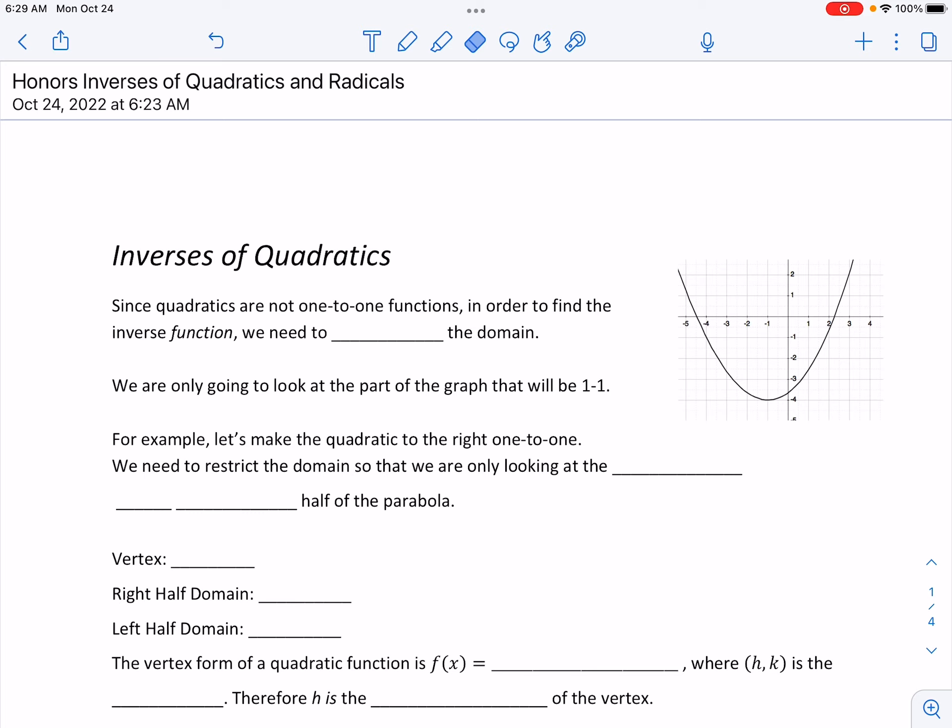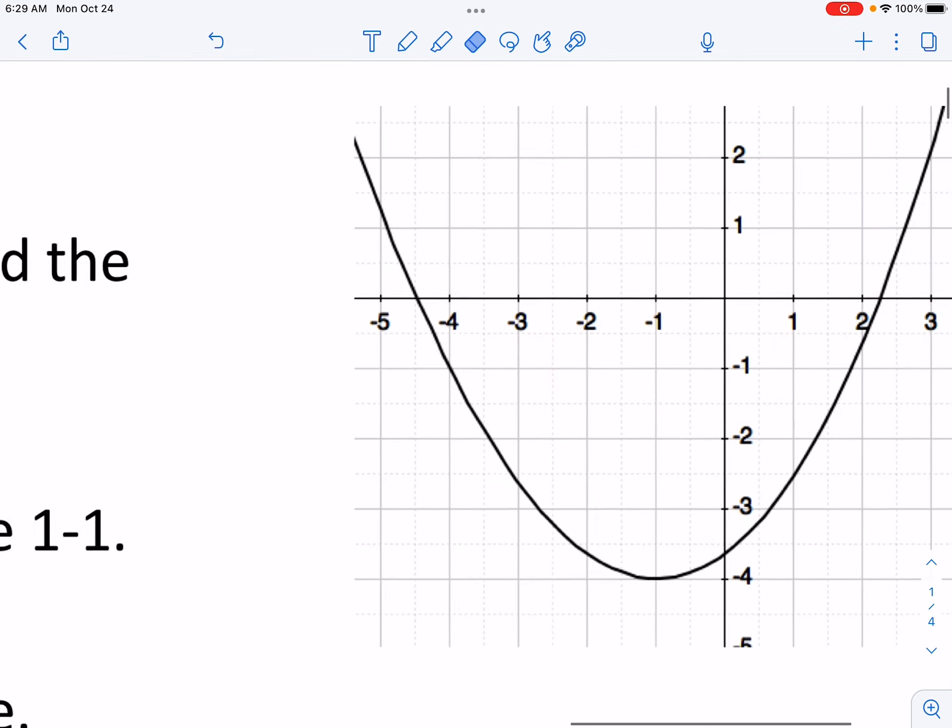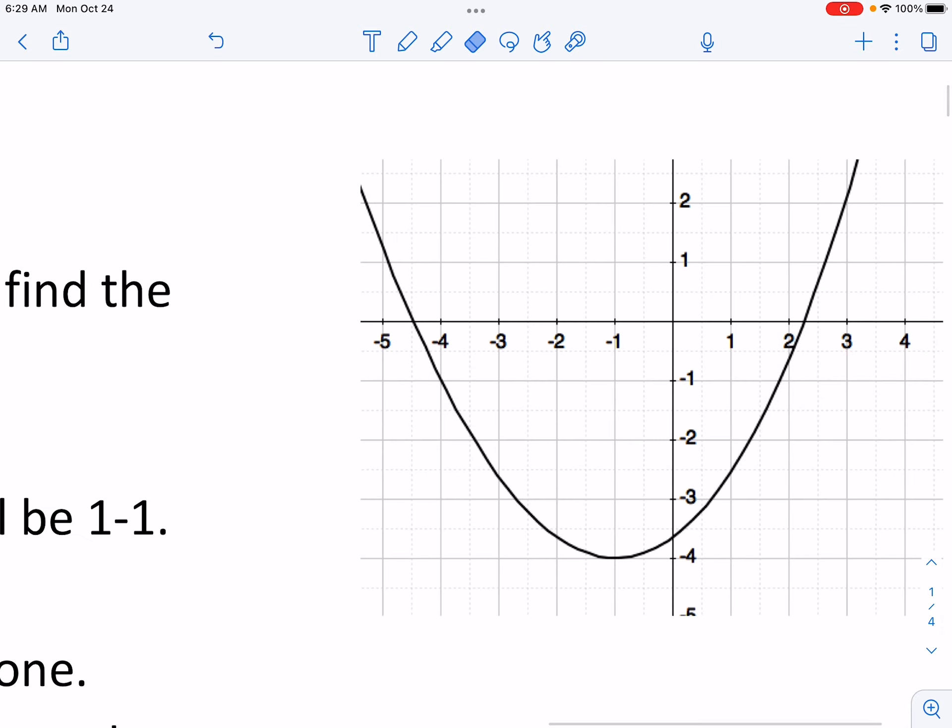Let's talk about the inverse of quadratics first. When we graph a quadratic we get what's called a parabola. Here we can see the vertex, the vertex point is at negative 1 negative 4.